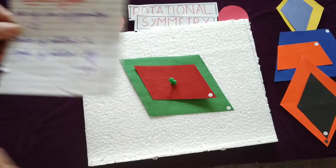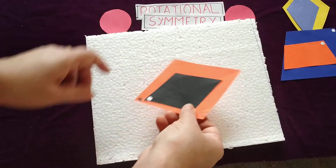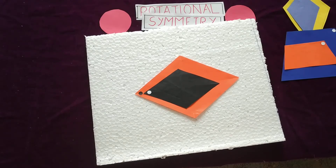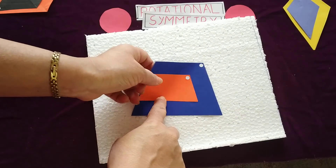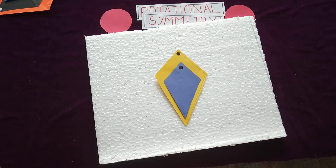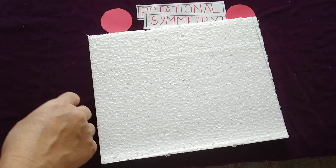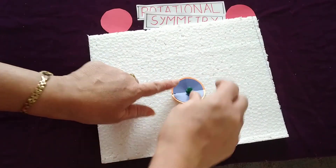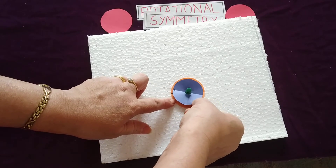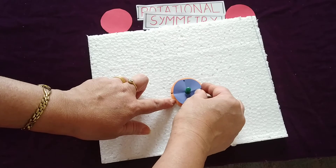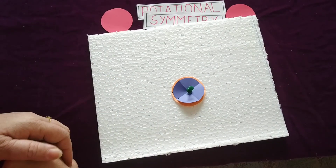For rhombus, trapezium, and kite — finding the order of rotation and angle of rotation is your homework. Just rotate and find out. Now take a circle. The number of lines of symmetry for a circle is infinite. Here also, if you rotate the circle even by a small amount, every time you will get the circle in the same place. So the order of rotational symmetry for a circle is infinite.